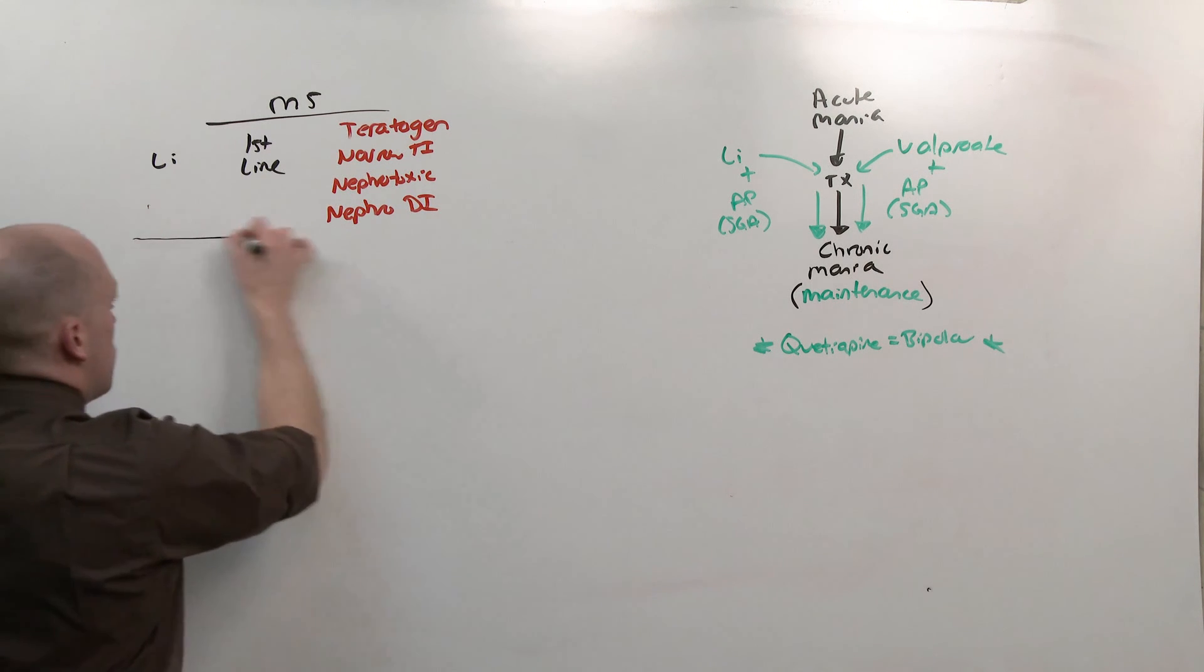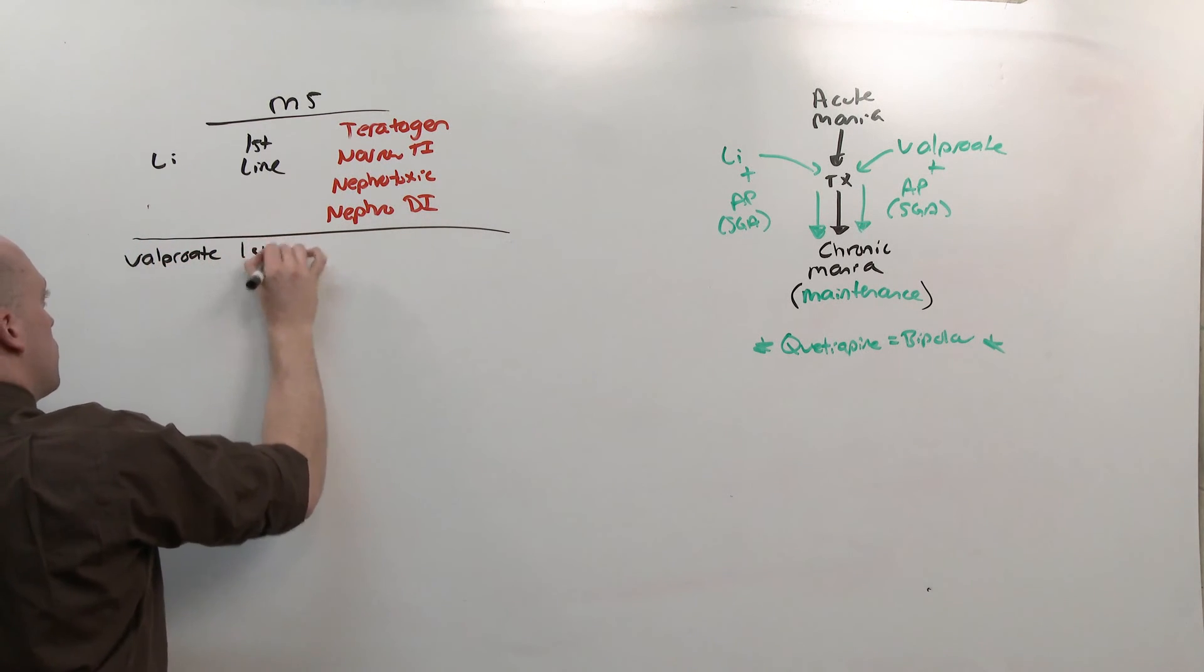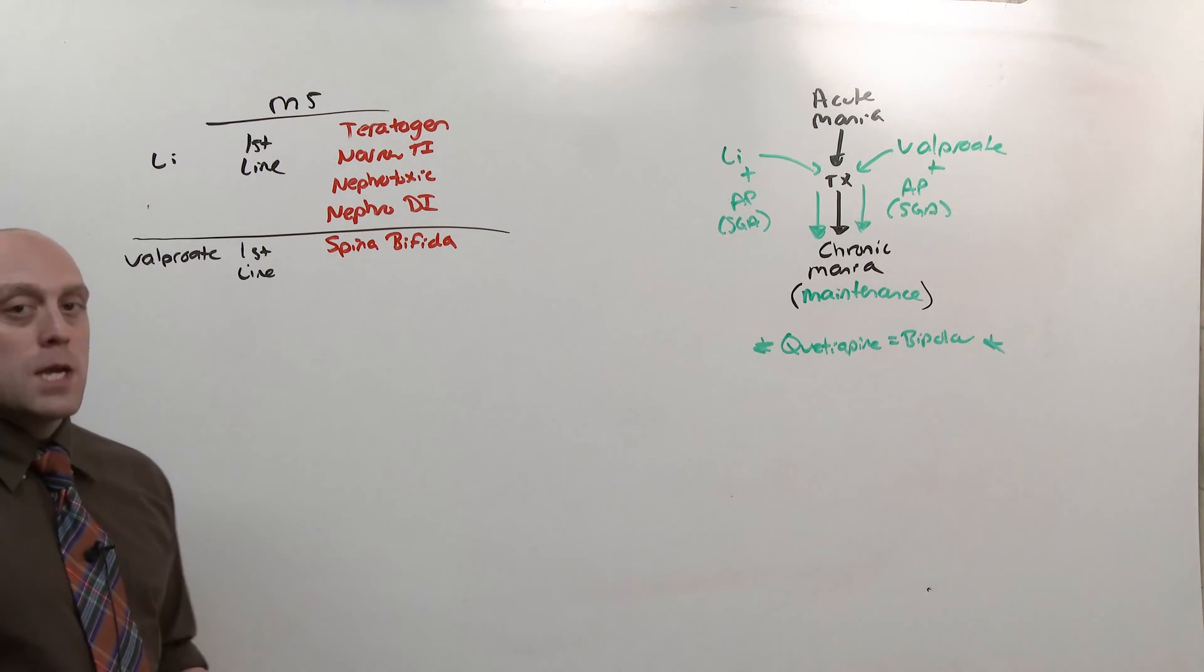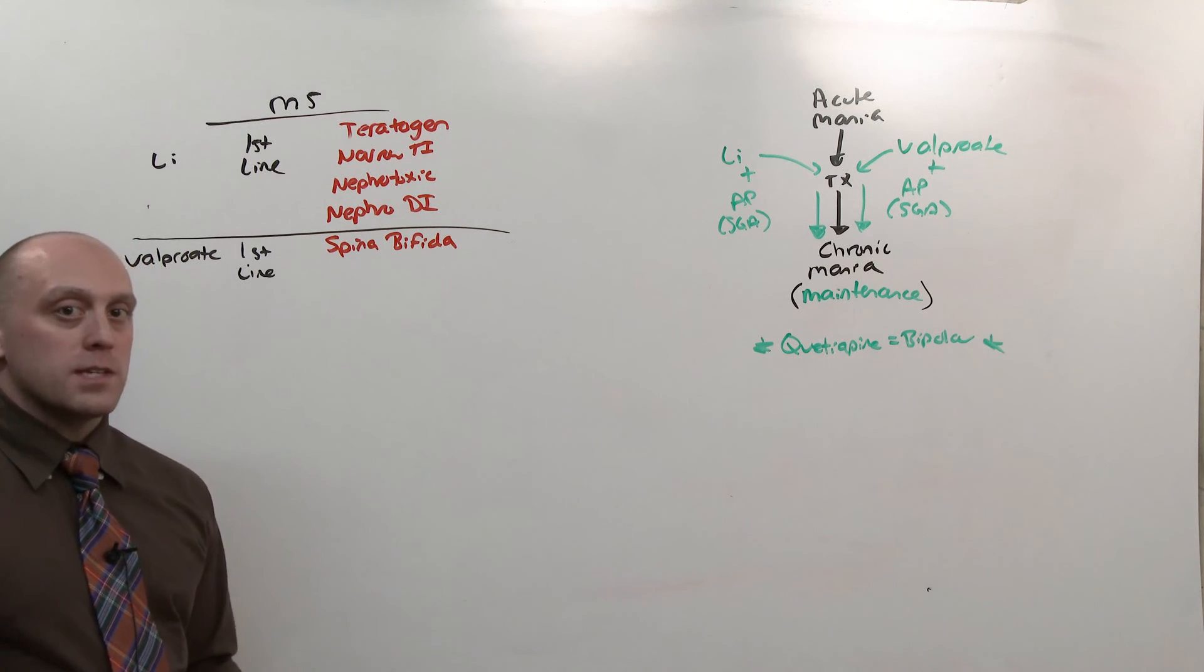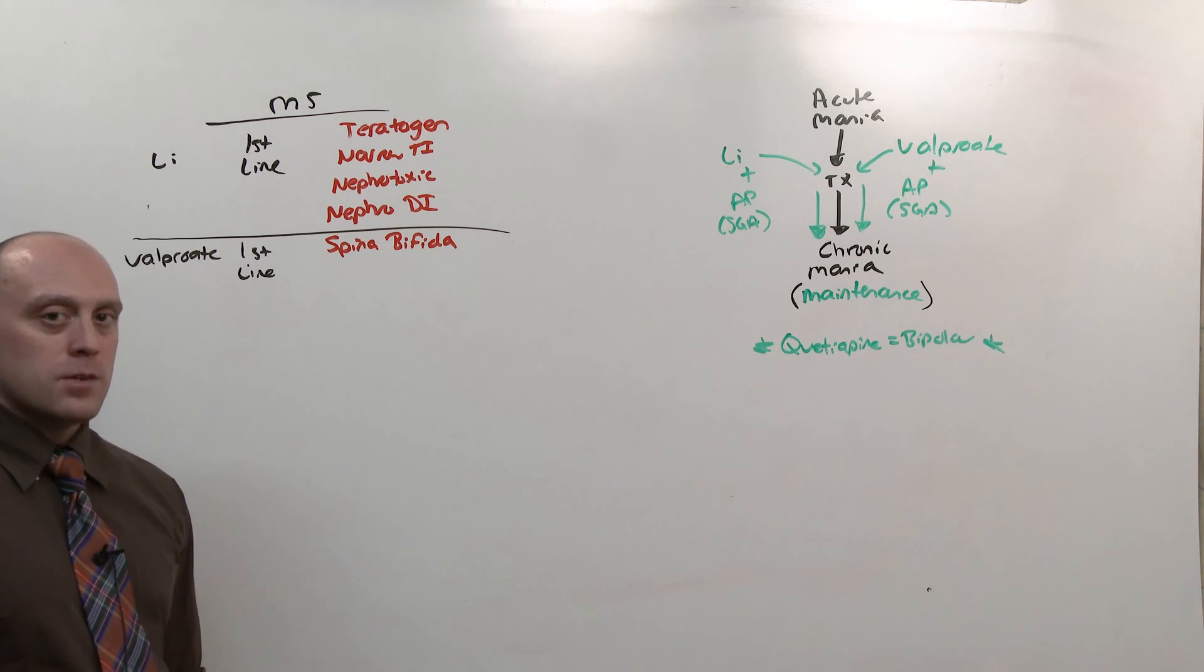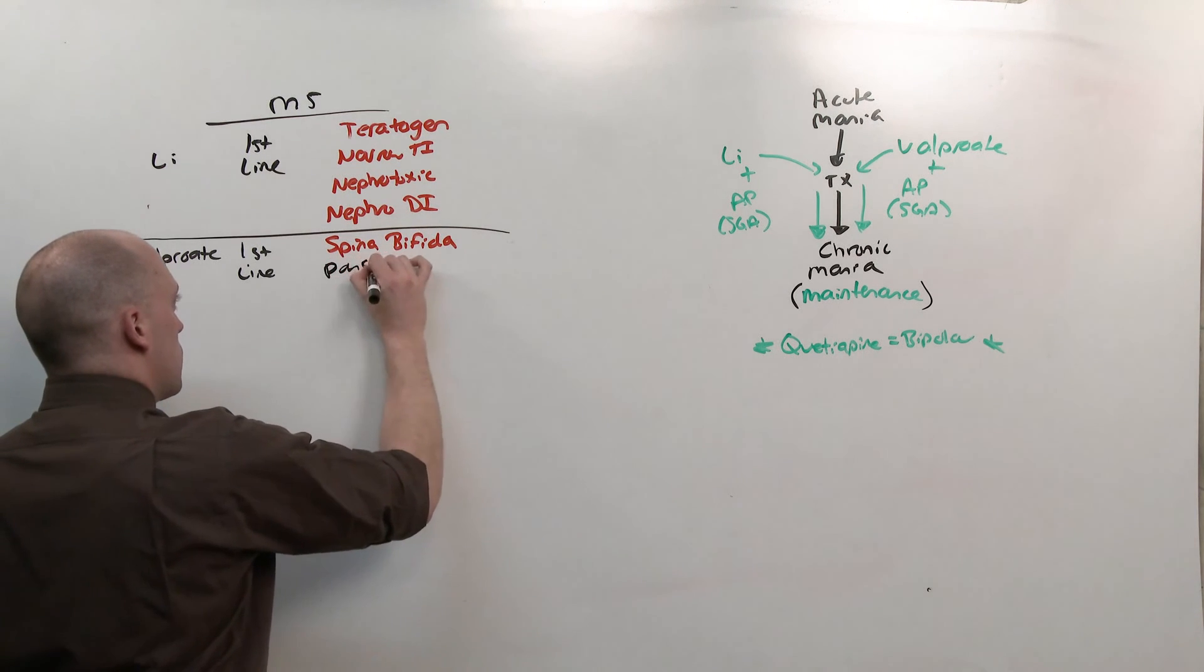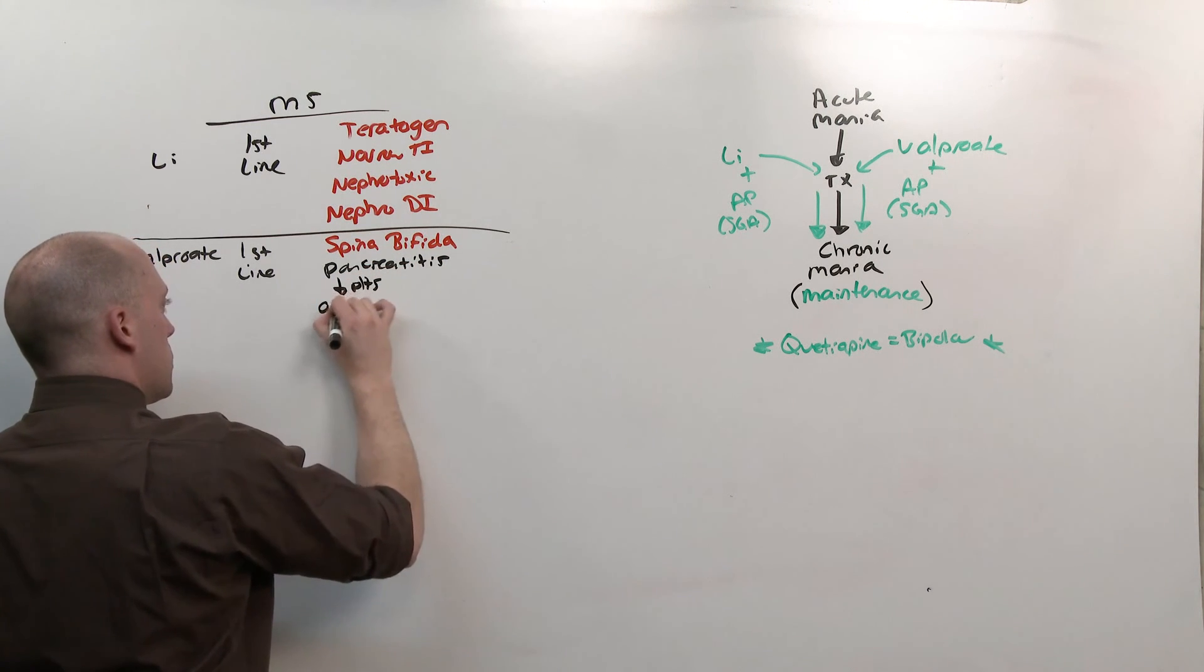If you can't use lithium for whatever reason, valproate, or valproic acid, is the other first line agent. It too is a teratogen in the way of causing spina bifida. And while you can put a woman on prenatal vitamins, people who may not be mentally stable are at higher risk for either not complying with the contraception regimen or being taken advantage of and engaging in sexual promiscuity. So that means that valproic acid may not be the right choice for a woman, especially if she's trying to get pregnant. But it's still a first line agent. Some other stuff that sometimes comes up is pancreatitis, decreased platelets, or full-blown agranulocytosis.